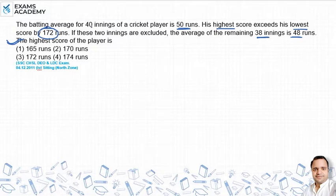So, for 40 innings, what will the total score be? We find out the total score in 40 innings. What is the average score in 40 innings? If you multiply innings and average, we will get the total.